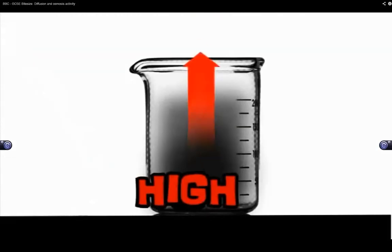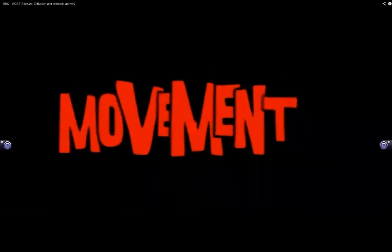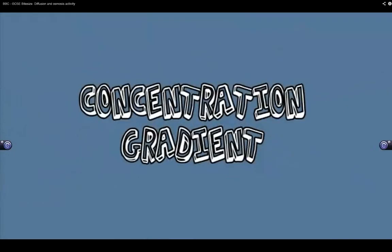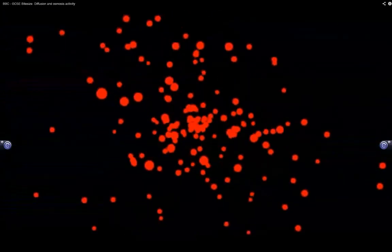They move from where there's a lot of ink, a high concentration, to where there is less, a low concentration. They move from high to low concentration, so we say they diffuse down a concentration gradient. The greater the difference between the high and low levels, the faster the spread.